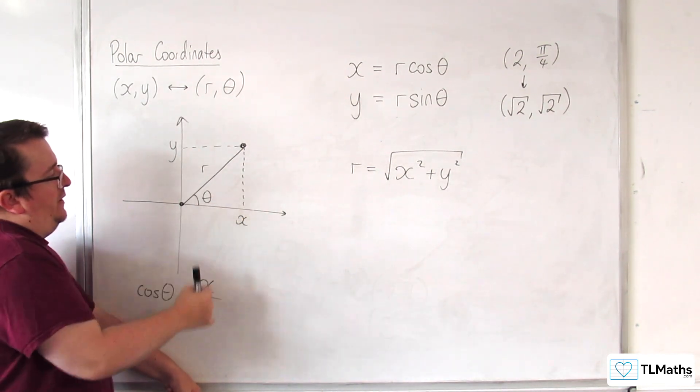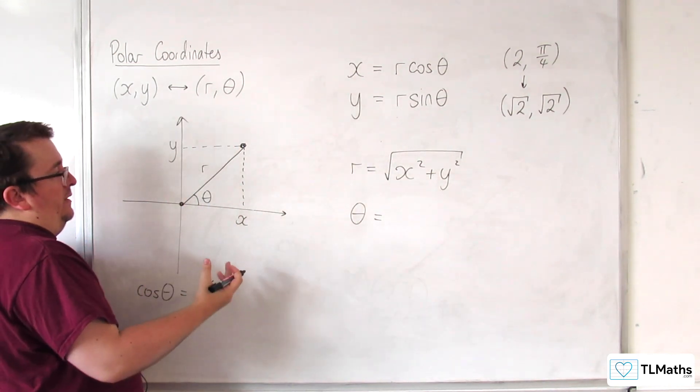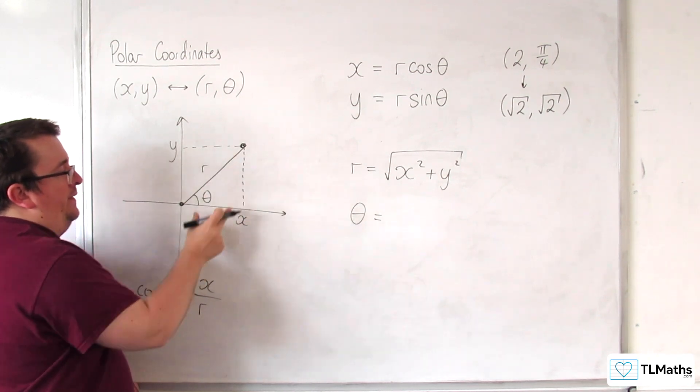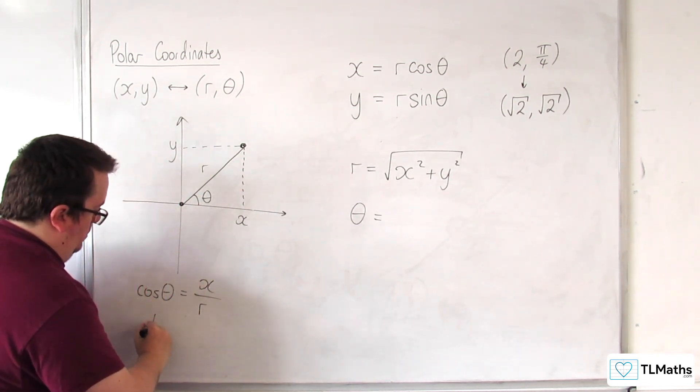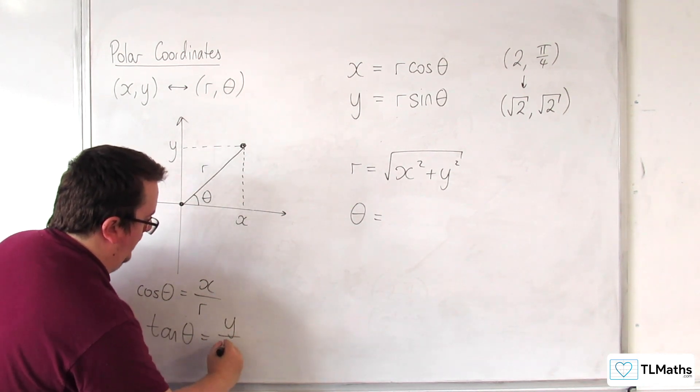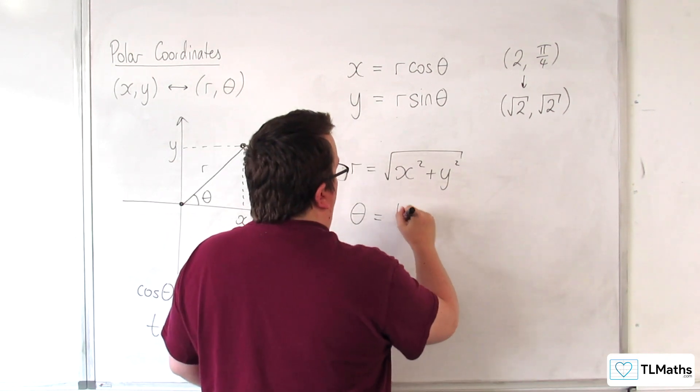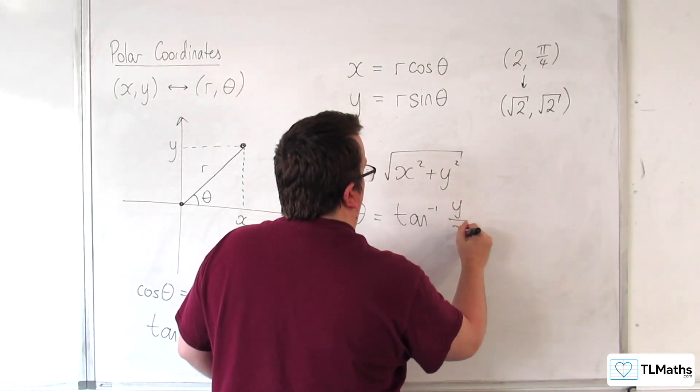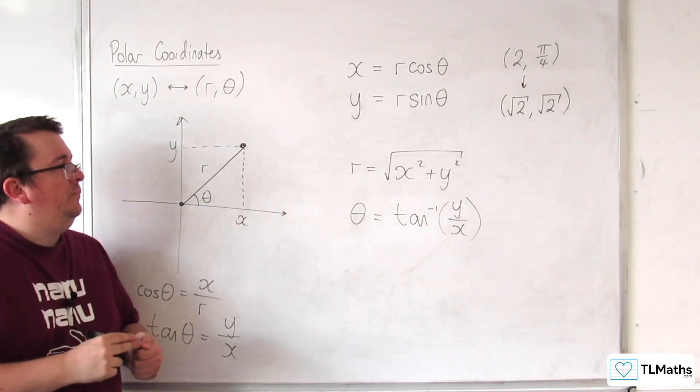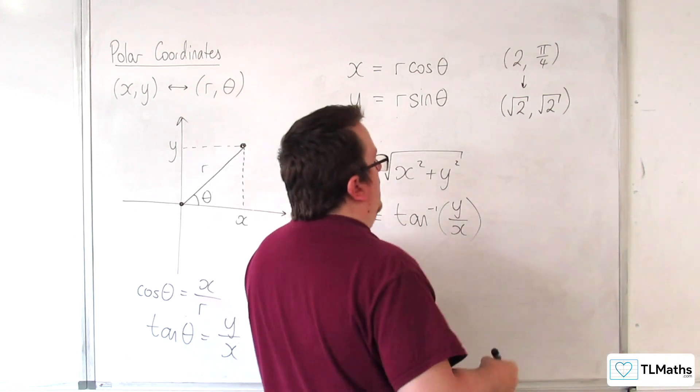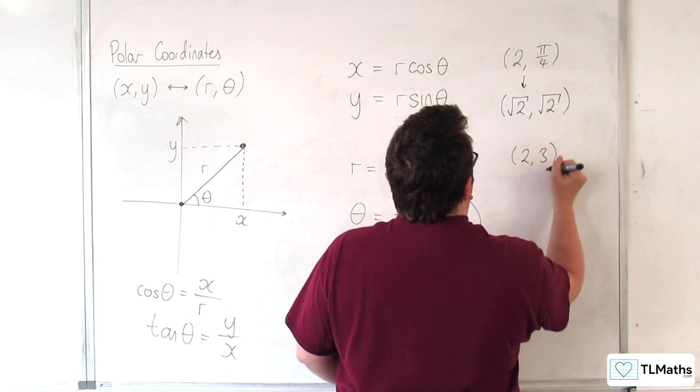And theta, well, tan of theta is equal to the opposite Y over the adjacent X. So theta equals the inverse tan of Y over X. So given a set of coordinates, let's say (2, 3) for example.